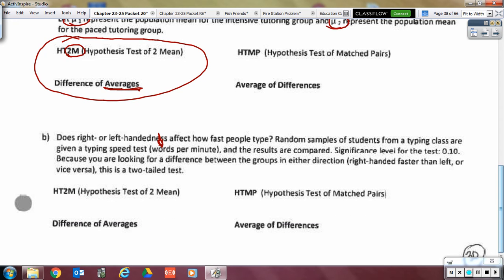All right. B. Does right or left-handedness affect how fast people type? Random samples of students from a typing class are given a typing speed, or in words per minute, and the results are compared. Significance levels for the test is at 0.10. Because you are looking for a difference between the groups in either direction, meaning the right-handed faster than the left or vice versa, this is a two-tailed test, which, don't let this extra thing affect you. Being two-tailed has nothing to do with how many groups there are. That's just the alternative hypothesis would be using a not equal to, but that doesn't have anything to do with which one of these it is. So, what would this be? Two separate groups or a matched pair scenario? What is it? It is two separate groups. You're not going to have a right-handed first and then a left-handed later or do the separate things. They are two separate groups, so we have difference of averages.